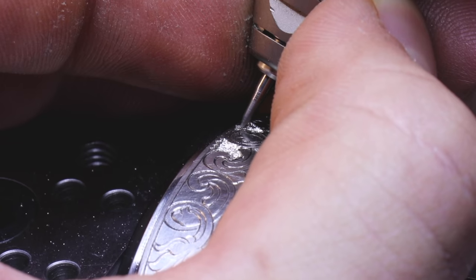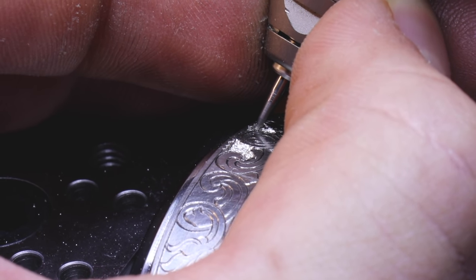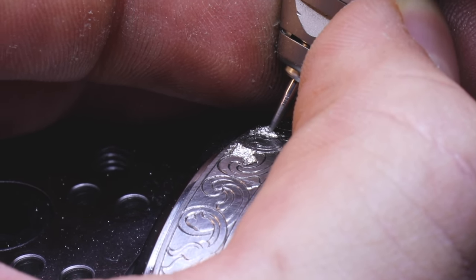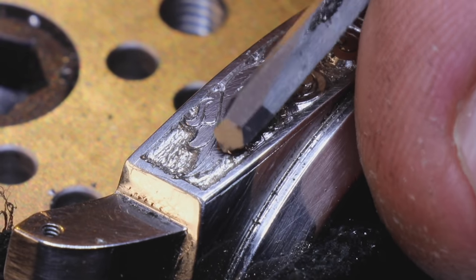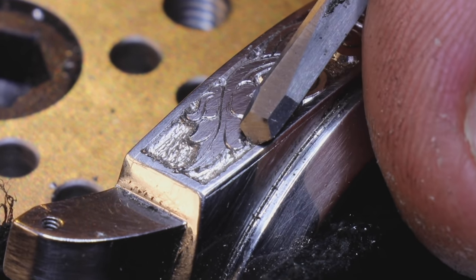Once I have cut all the outlines, I use a fine dental drill to remove metal and lower the background. Occasionally I will use small and flat carbide punches to flatten the background afterwards.